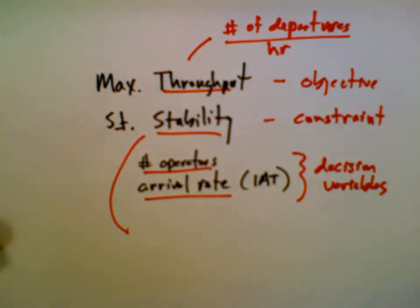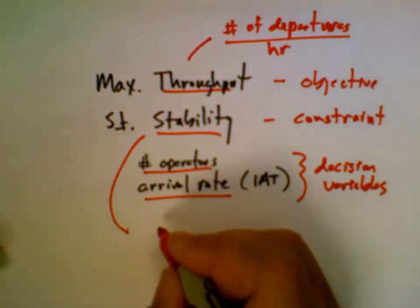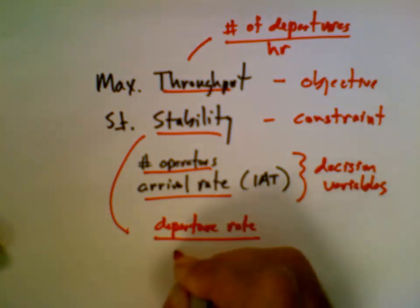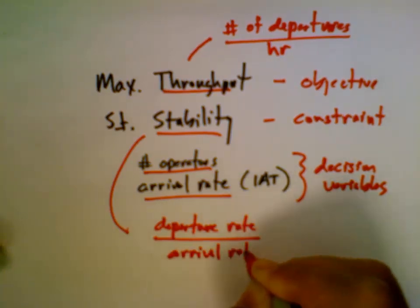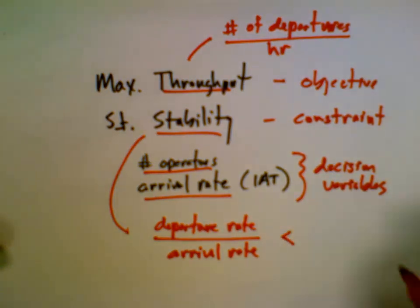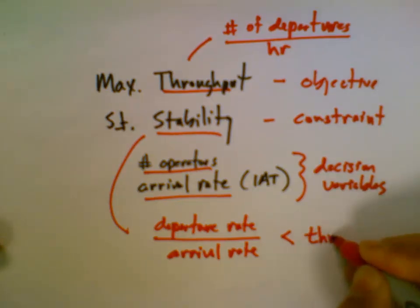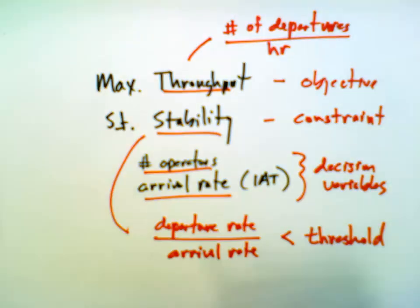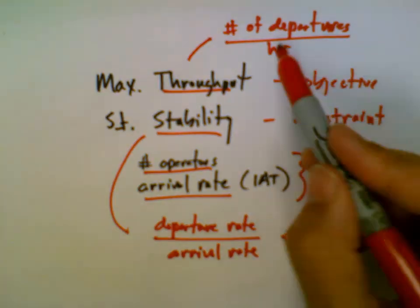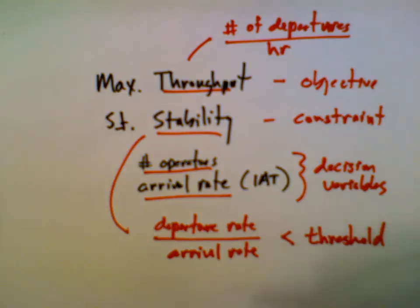We're going to use a slightly different criteria here. We're going to monitor the ratio of the departure rate to the arrival rate. Ideally we'd like this ratio to be close to one, meaning everything that arrives departs. We have to accommodate some level of WIP, so we're going to ensure this value falls below some threshold. For our optimization model, when we get back to Simeo, we need to define the departure rate, the arrival rate, the threshold value, and tell Simeo that our objective is to maximize throughput.